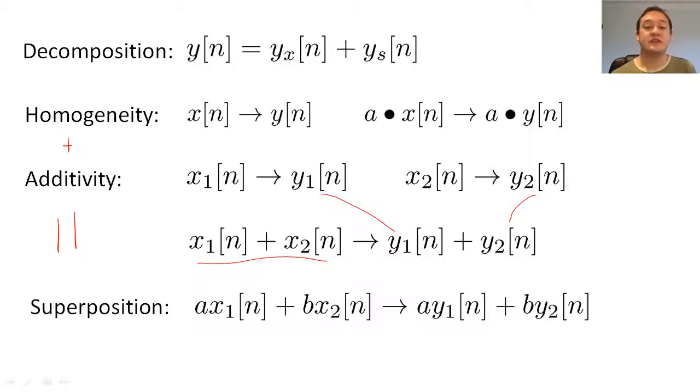A system is said to be zero state linear if the superposition property is true for this system when the delay registers all equal zero. A system is said to be zero input linear if the superposition property is true for the system when the input is always zero. Finally, we say that a system is linear if it satisfies the decomposition property and both y sub x of n and y sub s of n are linear.